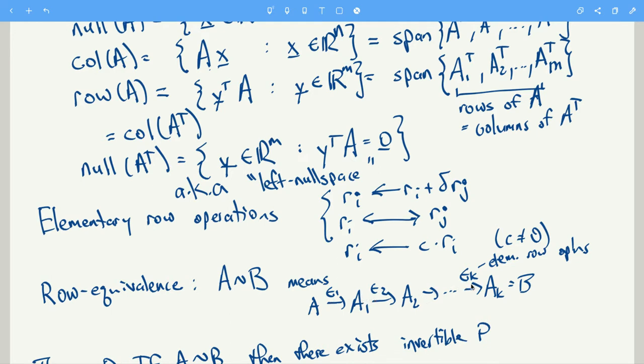starting from A gives you B, right? Okay, that means A is row equivalent to B.